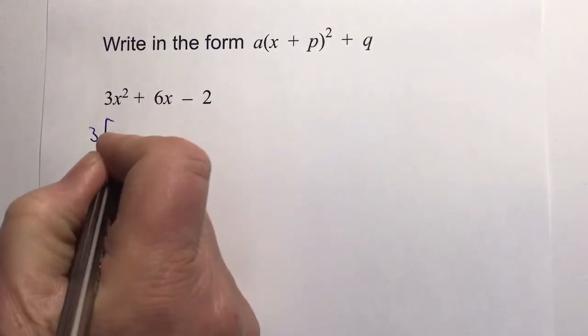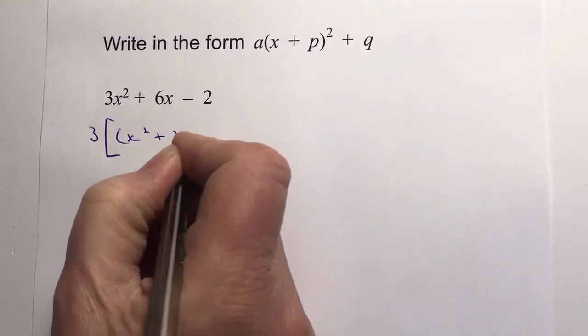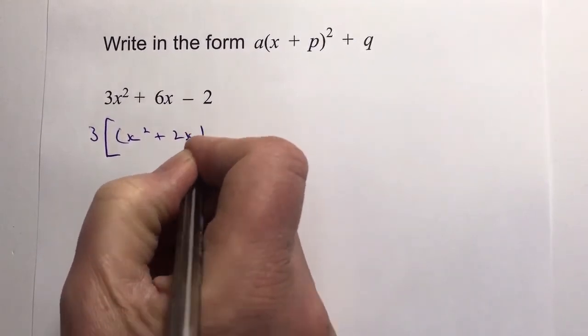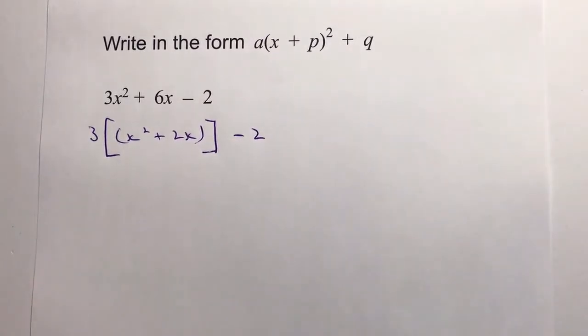The way I normally work is I put these things into square brackets because it separates everything I'm trying to do within this particular method.